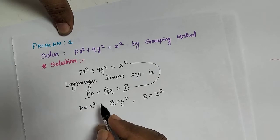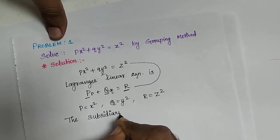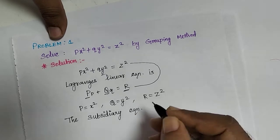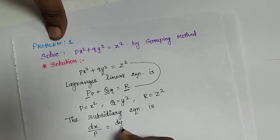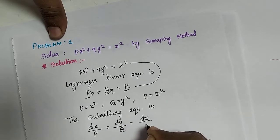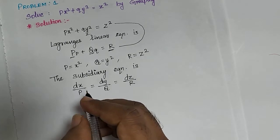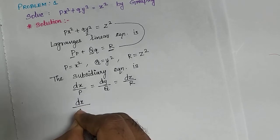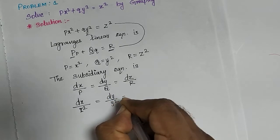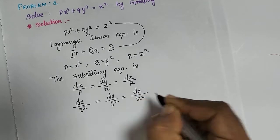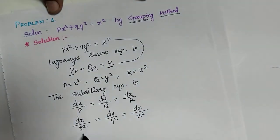Now to solve this, we write the subsidiary equation: dx divided by capital P equals dy divided by capital Q equals dz divided by capital R. Substituting the values of P, Q, R, the subsidiary equation becomes: dx divided by x-squared equals dy divided by y-squared equals dz divided by z-squared.